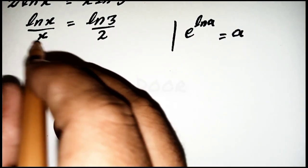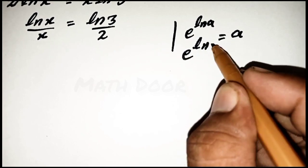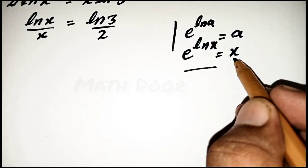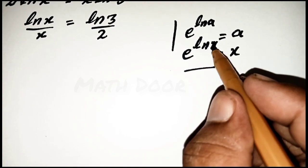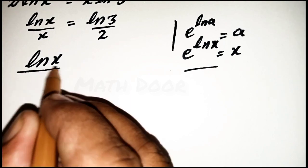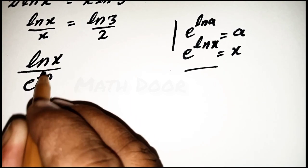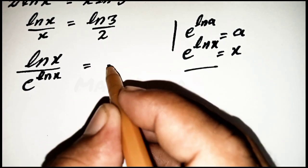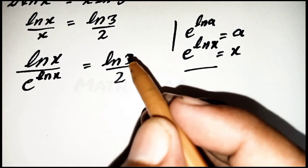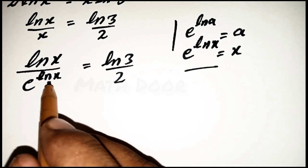We have another logarithmic rule: e^(ln a) = a. From here we write that e^(ln x) = x, so x = e^(ln x). We substitute: e^(ln x) / e^(ln x) = ln(3)/2, giving us ln(x) = ln(3)/2.